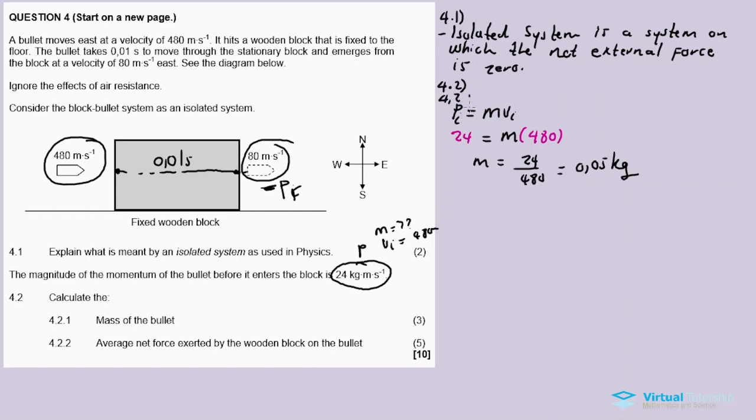Now for 4.2.2: Calculate the average net force exerted by the wooden block on the bullet. So let's use impulse. Impulse is equal to force times duration, which is equal to the change in momentum.